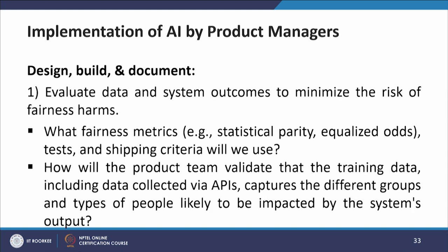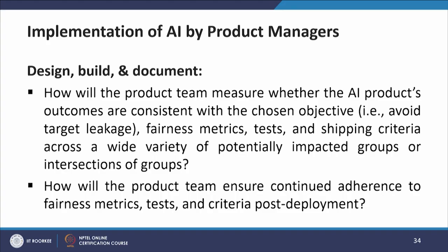For the first step — evaluate data and system outcomes to minimize fairness harms — key questions include: what fairness metrics such as statistical parity, equalized odds, and chipping criteria will be used? How will the product team validate that training data captures the different groups and types of people likely to be impacted? How will the team measure whether AI product outcomes are consistent with the chosen objective to avoid target leakage? How will the product team ensure continued adherence to fairness metrics post-deployment?